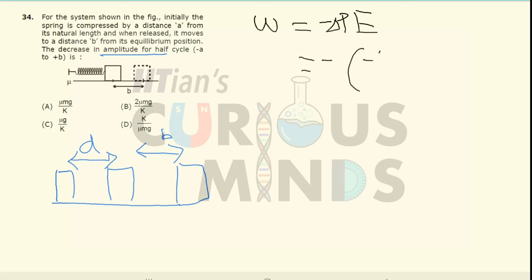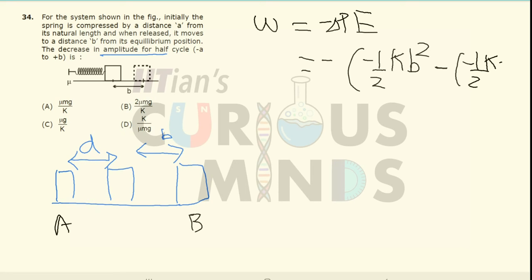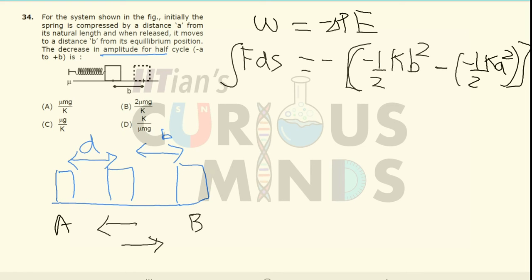The final potential energy will be equal to minus half k·b², when it is at position 'b' (the final position), minus of minus half k·a² (the initial potential energy). The friction force acts in the opposite direction to the displacement.